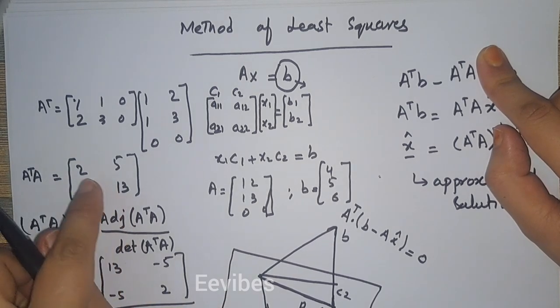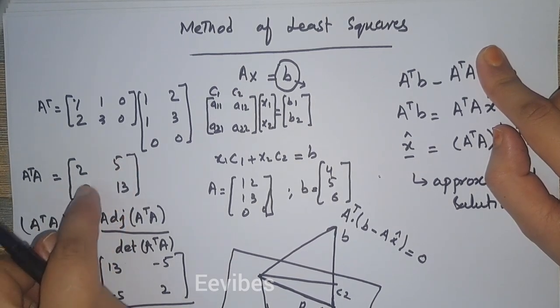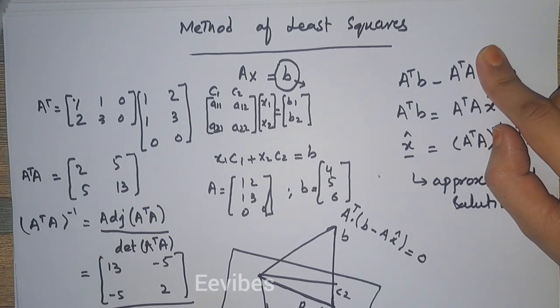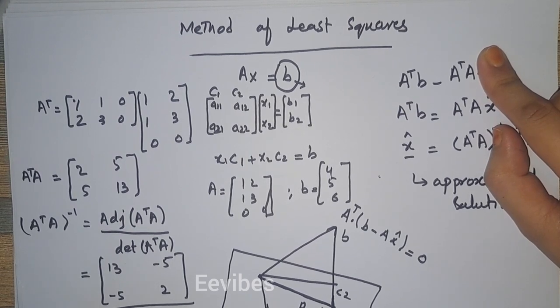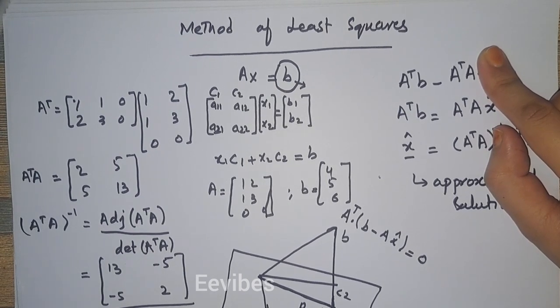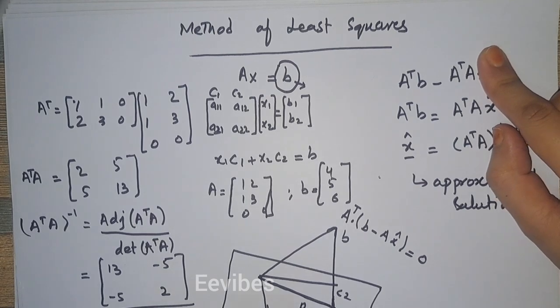While the determinant is 13 times 2, which is 26, and 5 times 5 is 25, which is 26 minus 25. So this is actually the inverse of A^T into A.